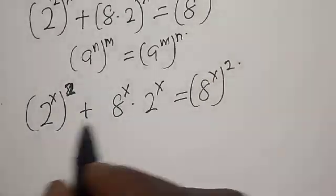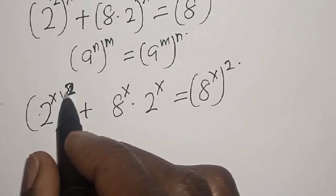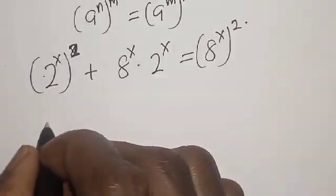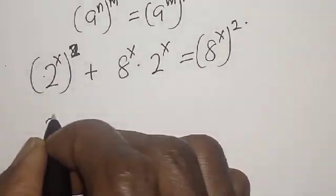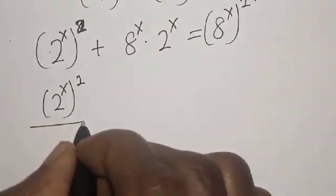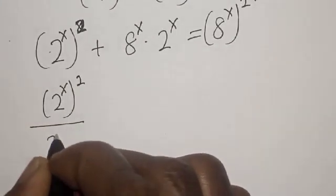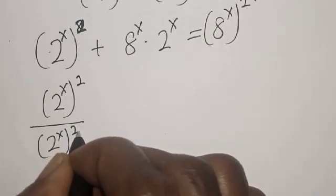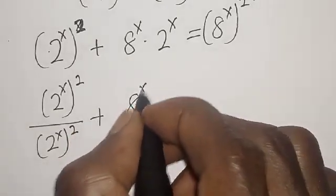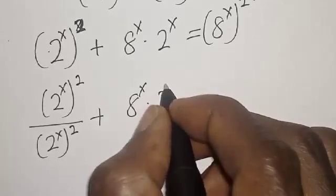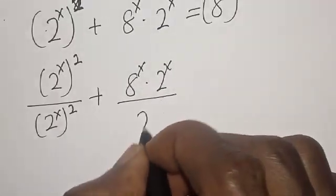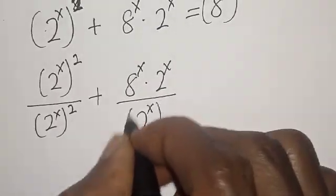Divide both sides by 2 raised to power s squared. We get: 2 raised to power s squared divided by 2 raised to power s squared, plus 8 raised to power x multiplied by 2 raised to power s, divided by 2 raised to power s squared.